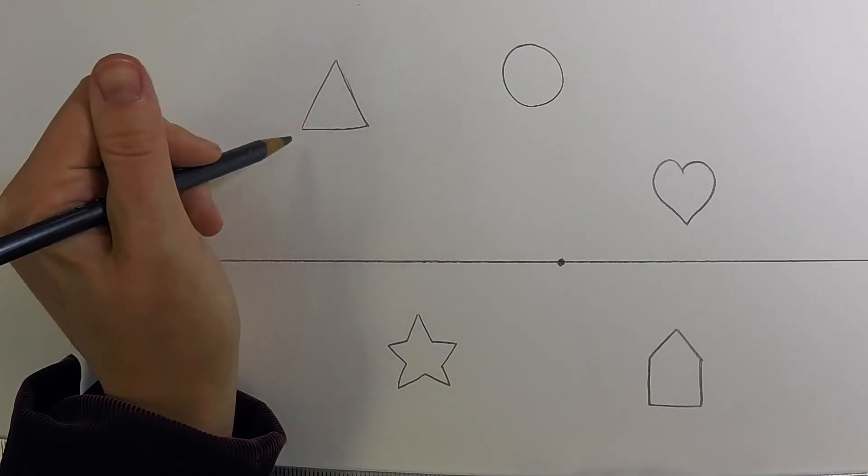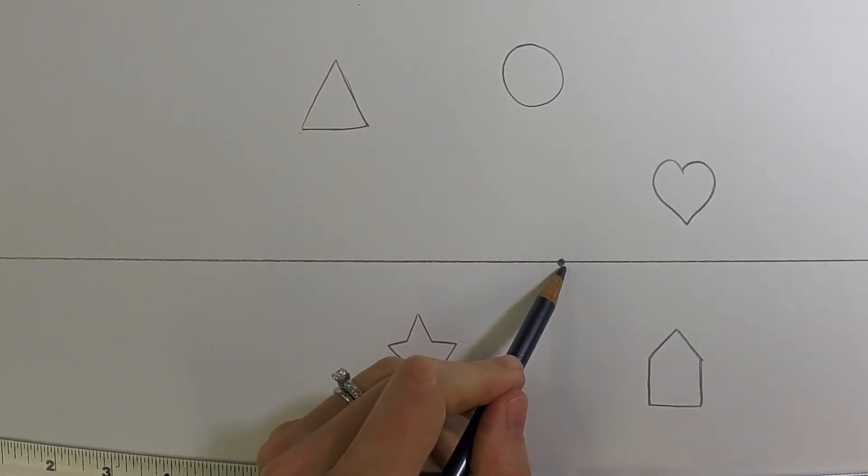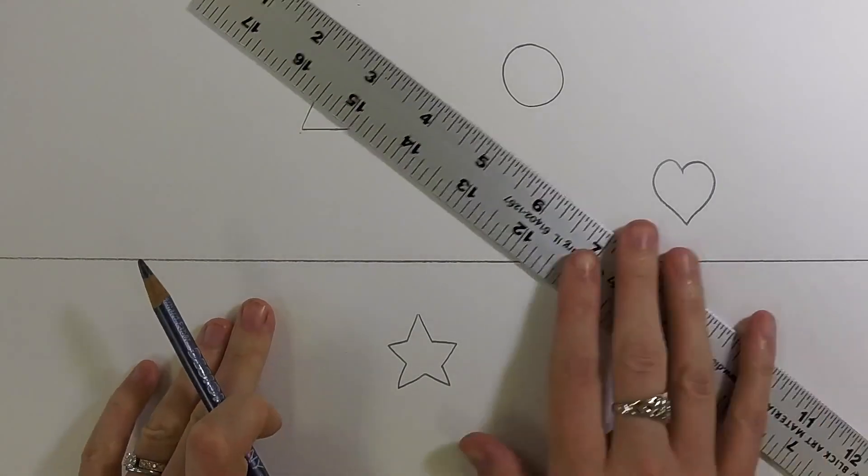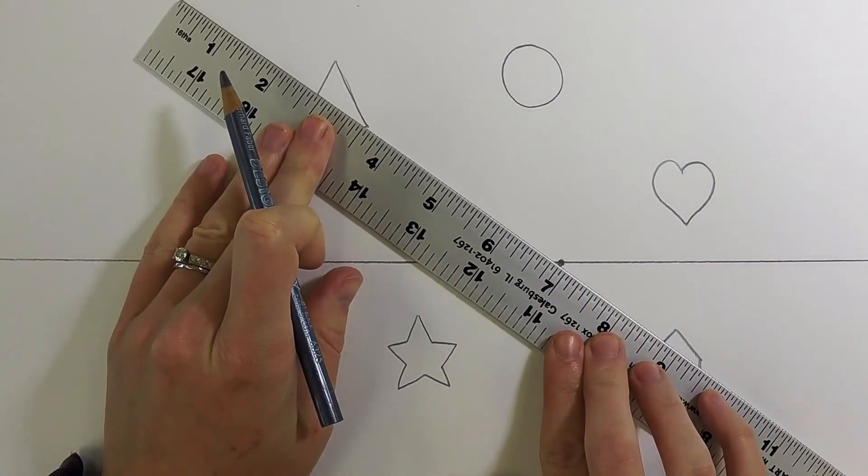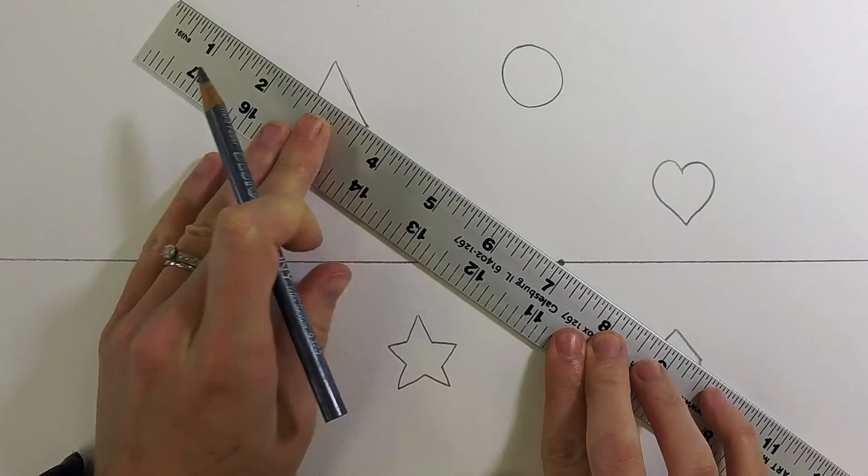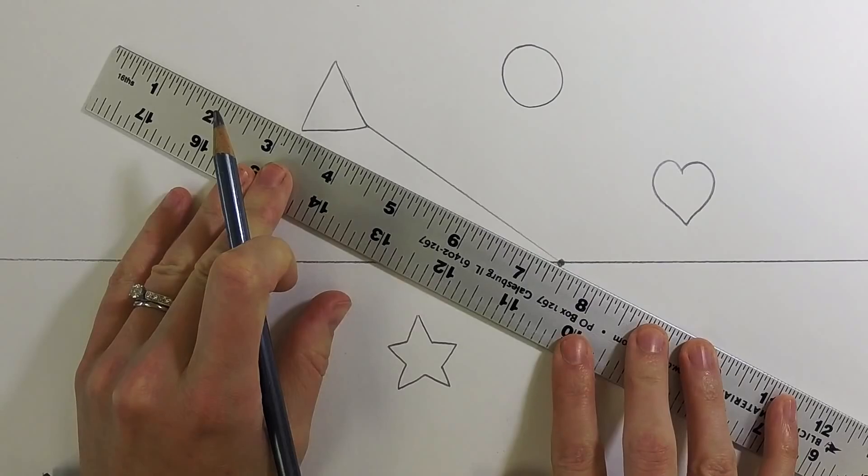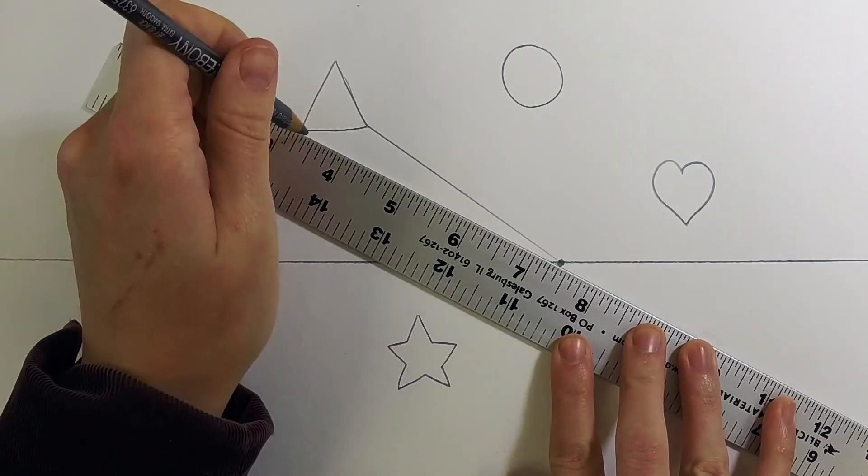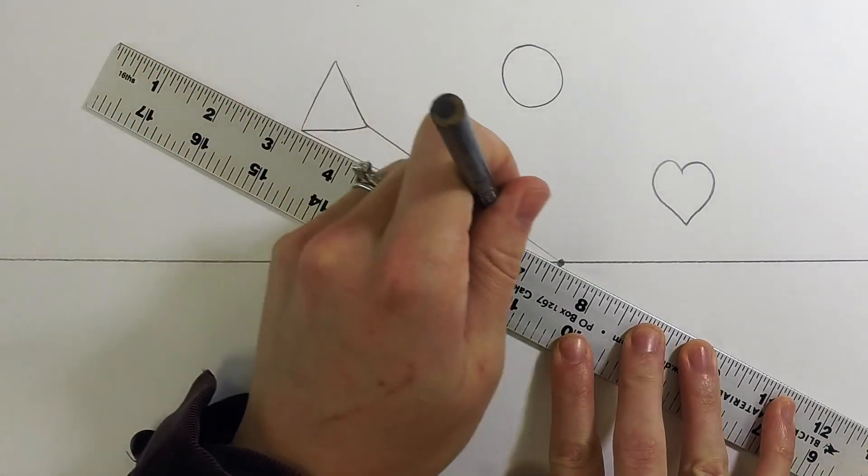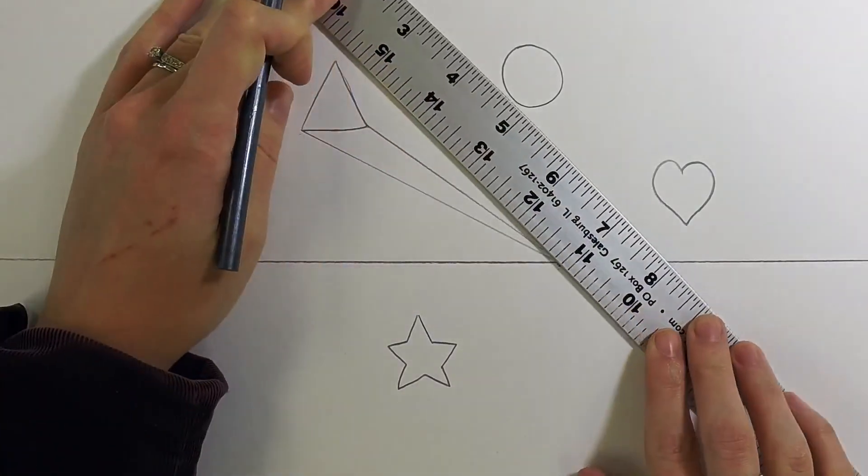Just like with boxes, it goes from the corners of the shape to the vanishing point. We'll begin by lining up our ruler with the vanishing point and the corners of our shapes. When we draw these lines, draw them lightly because we'll be erasing most of them. You don't want to have leftover lines in your drawing.